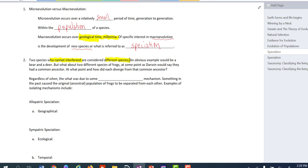Macroevolution occurs over millennia, thousands or millions of years. And of specific interest in macroevolution is the development of a new species, or what is referred to as speciation. We talked about this briefly on Friday with respect to what defines a population. Populations are groups of the same species that live and exist within an area and the key being that they interbreed. So two species that cannot interbreed are considered a different species. An obvious example would be a bear and a deer. They're separate species, they do not interbreed.